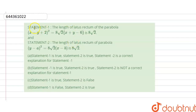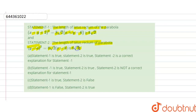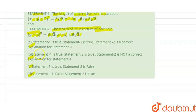Hello students. Today our question is: Statement 1 is the length of the latus rectum of the parabola (x minus y plus 2) whole squared equals 8 root 2 times (x plus y minus 6) is 8 root 2. Options a, b, c, d are given here, and we have to find which option is correct.